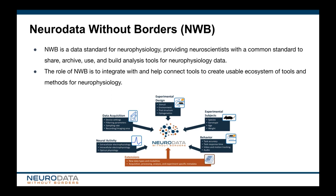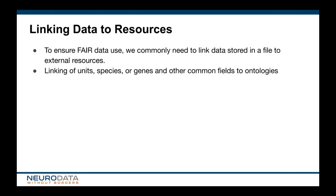We do not aim to standardize neurophysiology experiments, but we aim to standardize how we save and share data from neuroscience experiments. It is not our role to tell neuroscientists what kind and how to do experiments. An important aspect of organizing data and ensuring FAIR data use is the ability to relate these data to standardized ontologies and resources used by the community.